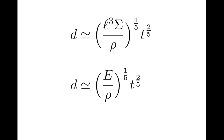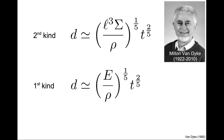In the parlance of Barenblatt, the second equation is a self-similar solution of the first kind, whereas the first equation is a self-similar solution of the second kind. Note that self-similar solutions of the second kind also include cases where the exponent is irrational — a case we'll deal with later in the series. So borrowing an expression from Van Dijk, who prefaced and reviewed most of Barenblatt's books, we may say that the first equation is a self-similar solution of the one-and-a-half kind, and reserve the proper second kind for later.